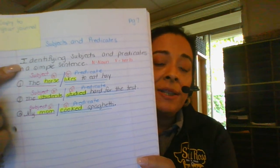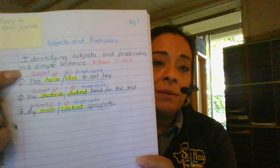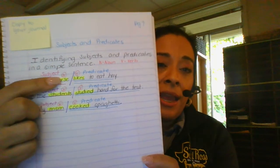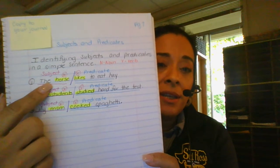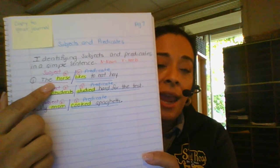So it says here, identify subjects and predicates in a simple sentence. N means noun, B means verb. And so what I did here to this sentence, the horse likes to eat hay.